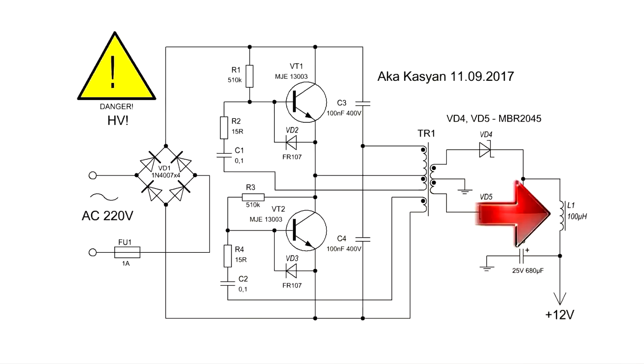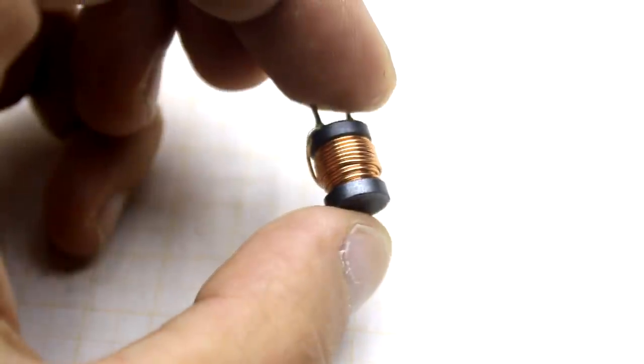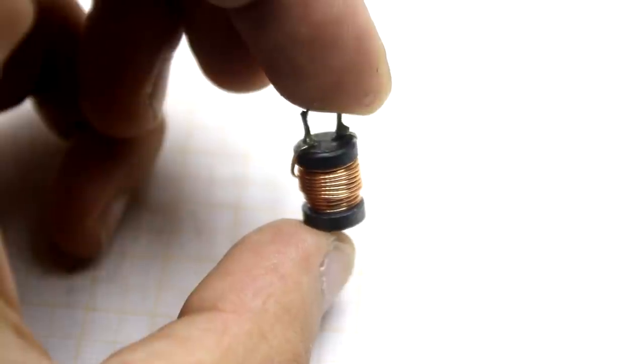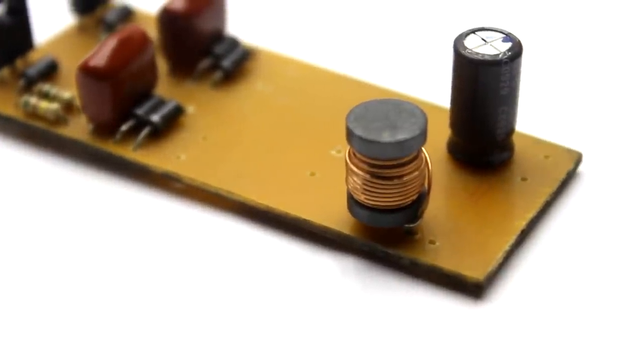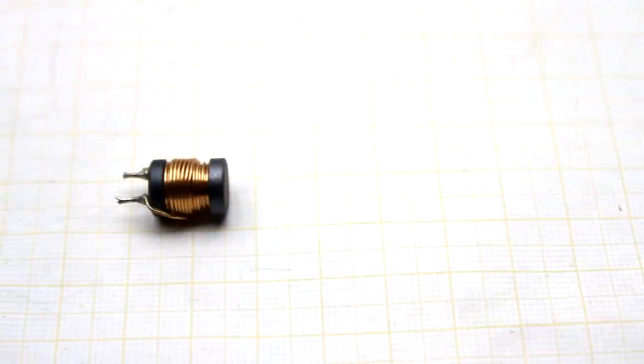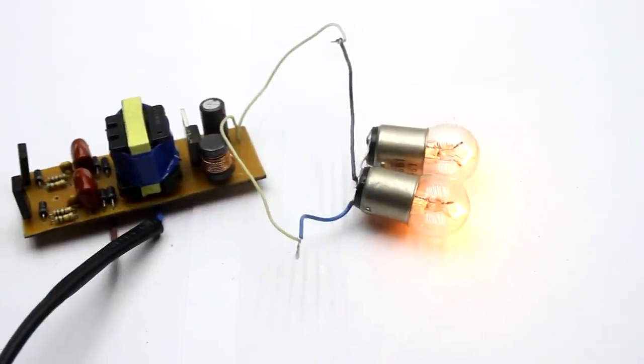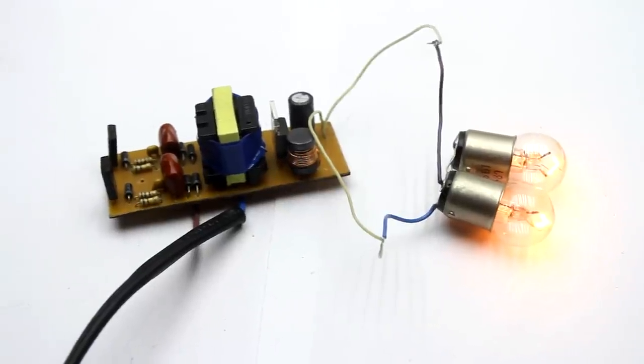The choke inductance is about 100µH. The diameter of the winding wire is 0.65 mm. The parameters of this throttle aren't particularly critical. In the preliminary tests I used chokes whose inductance was 50% different and they all worked fine.